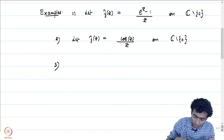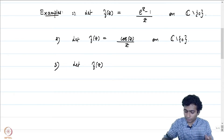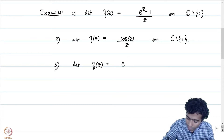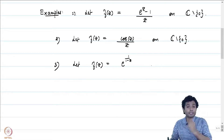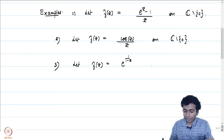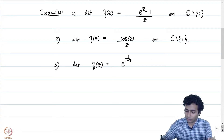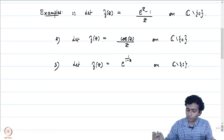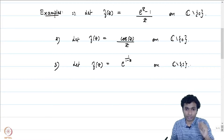Another example — and one should not get the feeling that singularities will always be around 0 — let us consider the function e^(1/(1-z)). This is the composition of e^z with the function 1/(1-z), and 1/(1-z) is a rational function which is defined and holomorphic away from z = 1. So this is defined and holomorphic by the chain rule on C minus {1}. We do not know how to define the function at z = 1 because 1/(1-z) does not make sense there.